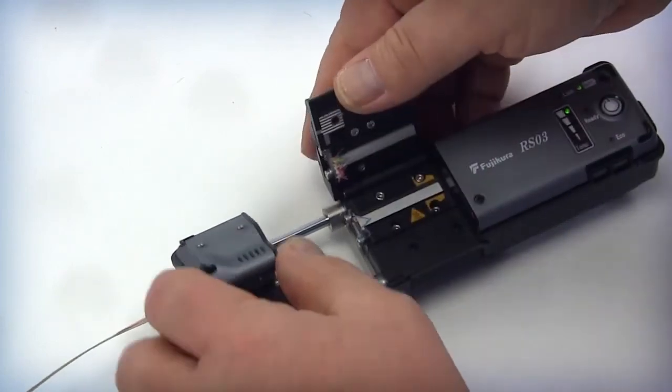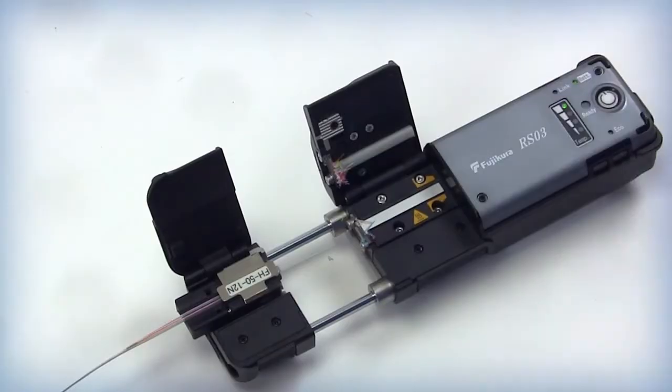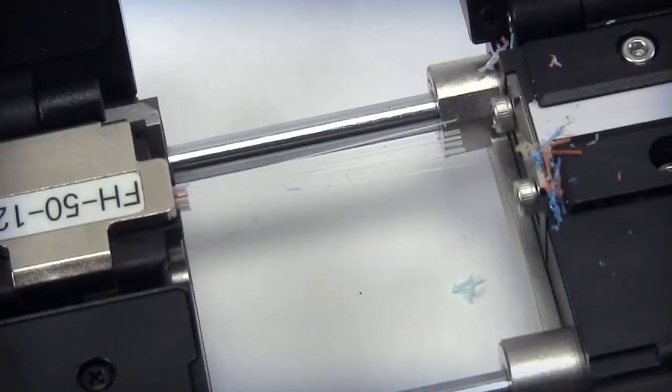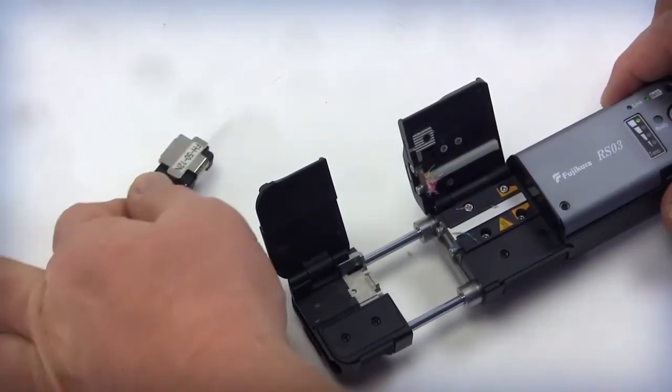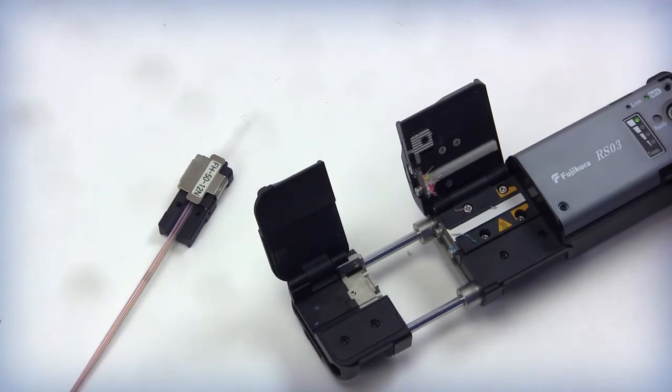Open the carrier cover and confirm that all coating has been removed. If any coating remains, this step will need to be repeated. Once all coating is removed, slide the fiber holder out, being careful not to damage the exposed 125 micron fibers.